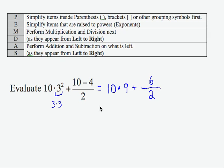And then we'll carry that down through the rest of the evaluation. 10 times 9, I do multiplication before addition, so I'm going to get 90 plus, and then I have 6 divided by 2, which gives me 3.